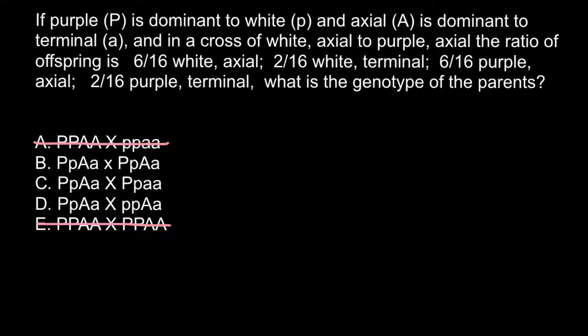Now let's analyze the remaining options more closely. We are told we got 6 out of 16 white axial plus 2 out of 16 white terminal, giving us 6 plus 2 out of 16. This gives us 8 out of 16 — in other words, one half, or 50%, are white. And another one half, or 50%, is purple.